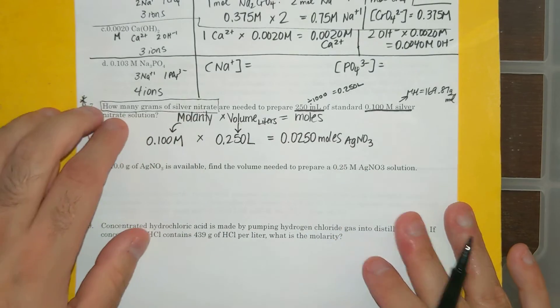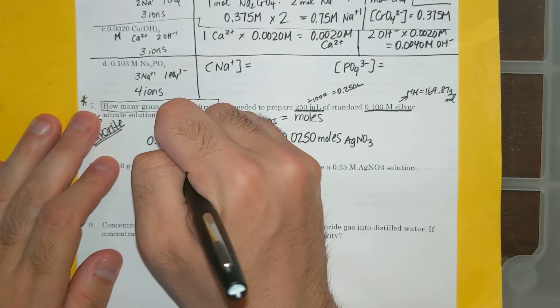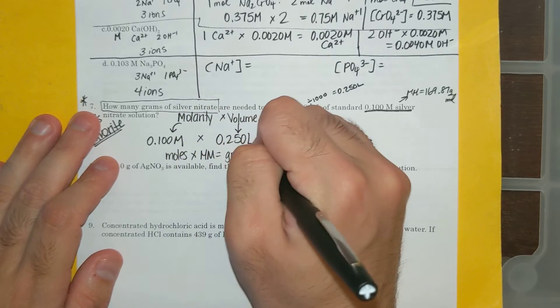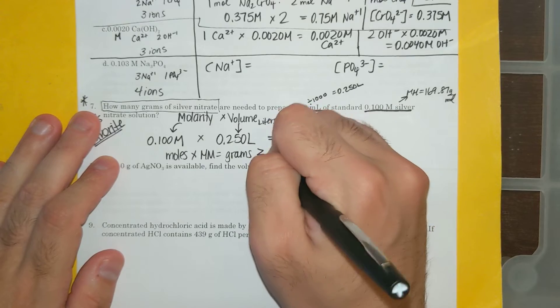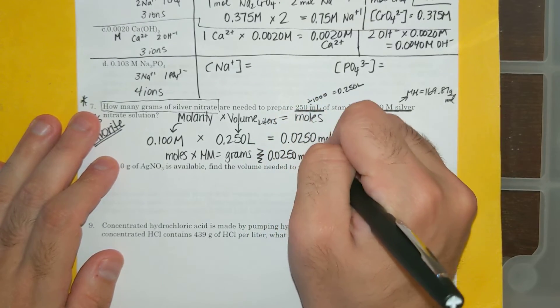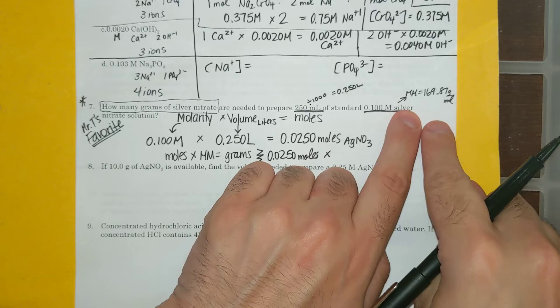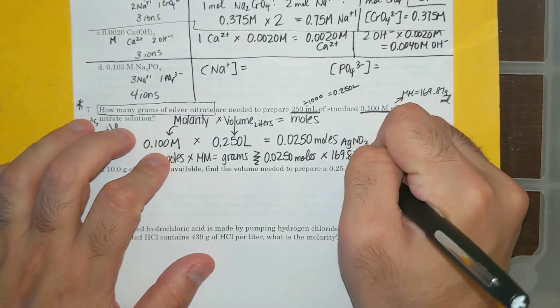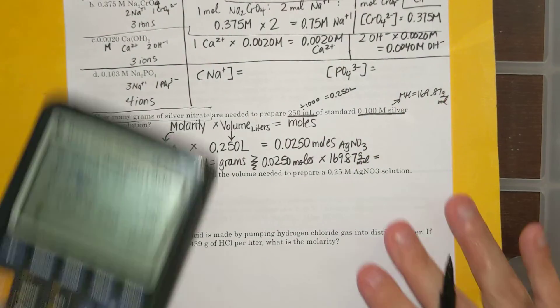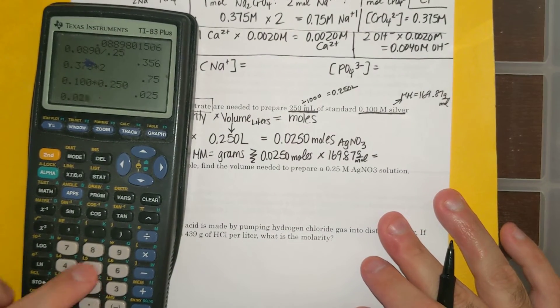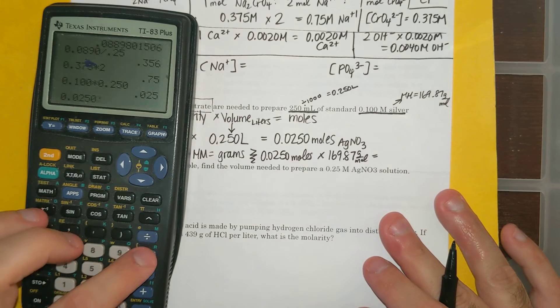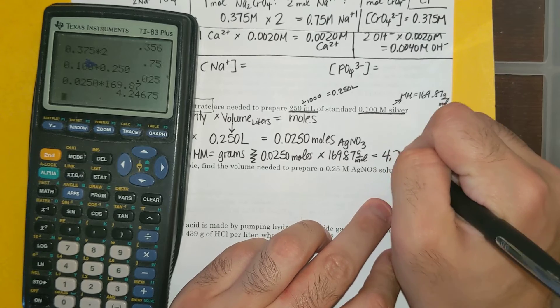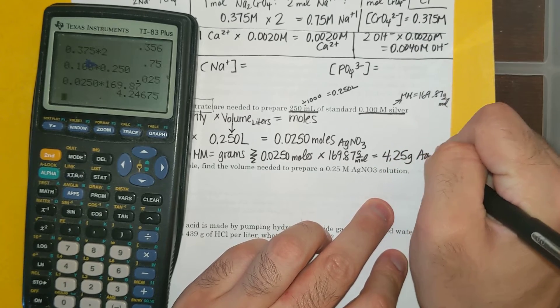And then it's asking for grams. Moles times molar mass equals grams. So I have 0.0250 moles already calculated. My molar mass, I calculated before, 169.87 grams per mole. If I do this math, 0.0250 times 169.87, I get 4.25 grams of AgNO3.